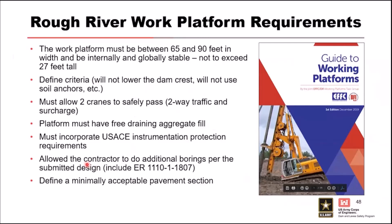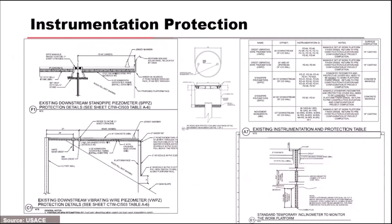Here are some examples of instrumentation protection details — manholes and road boxes to protect our instruments. We provided a comprehensive list of every instrument that would need to be protected based on the size of their work platform. This is not being overly prescriptive — in our instance, we had significant investments in these instruments, and many had long historical value that would be lost even with replacement. There's no guarantee that a replacement instrument in karst is going to give you the same information the other was tracking. It's okay to protect your instruments and make sure your contract considers that.